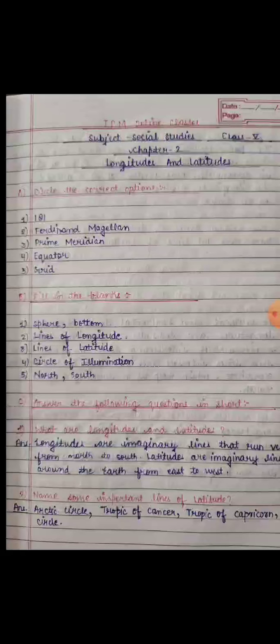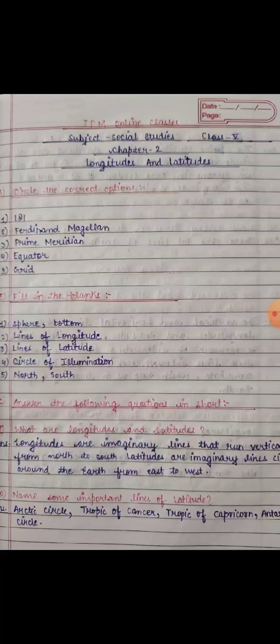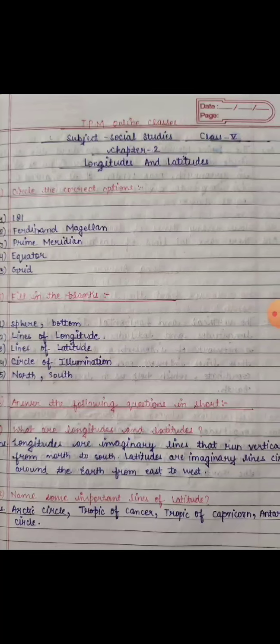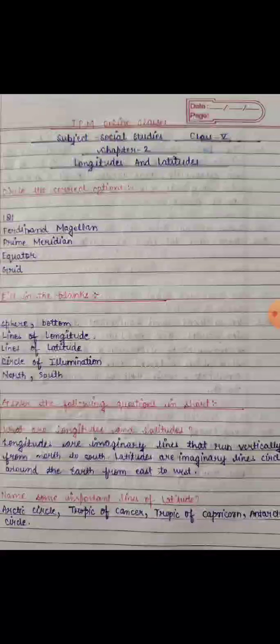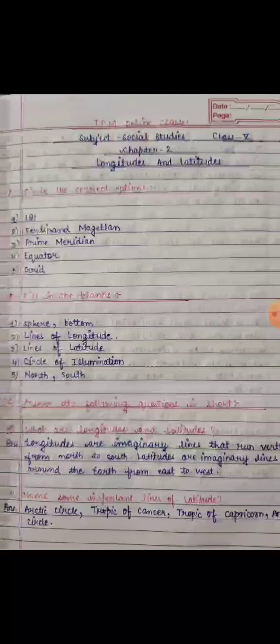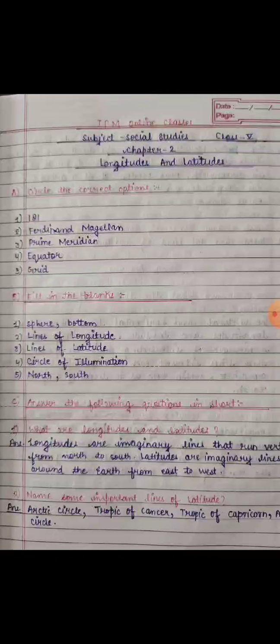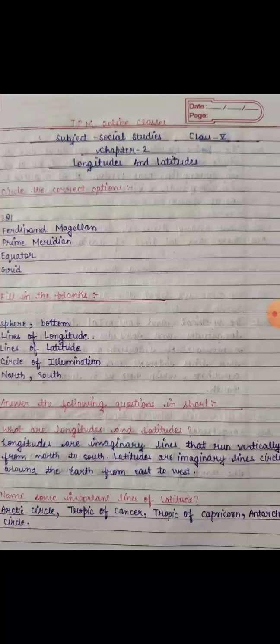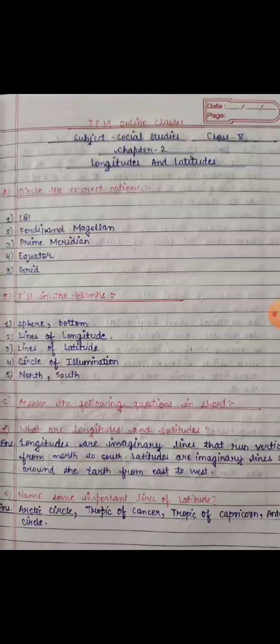Next question: name some important lines of latitude. The important lines of latitude are: first, the Arctic Circle; second, the Tropic of Cancer; third, the Tropic of Capricorn; and fourth, the Antarctic Circle.